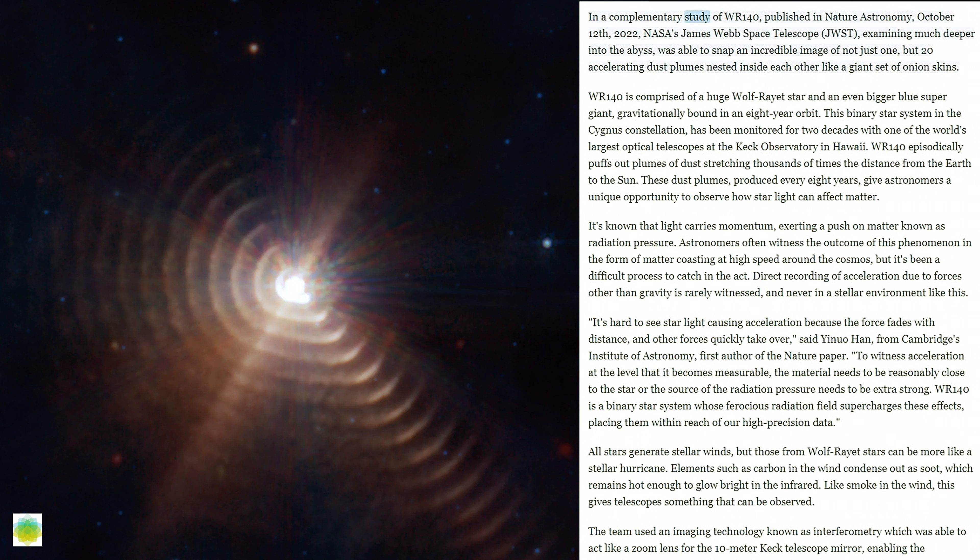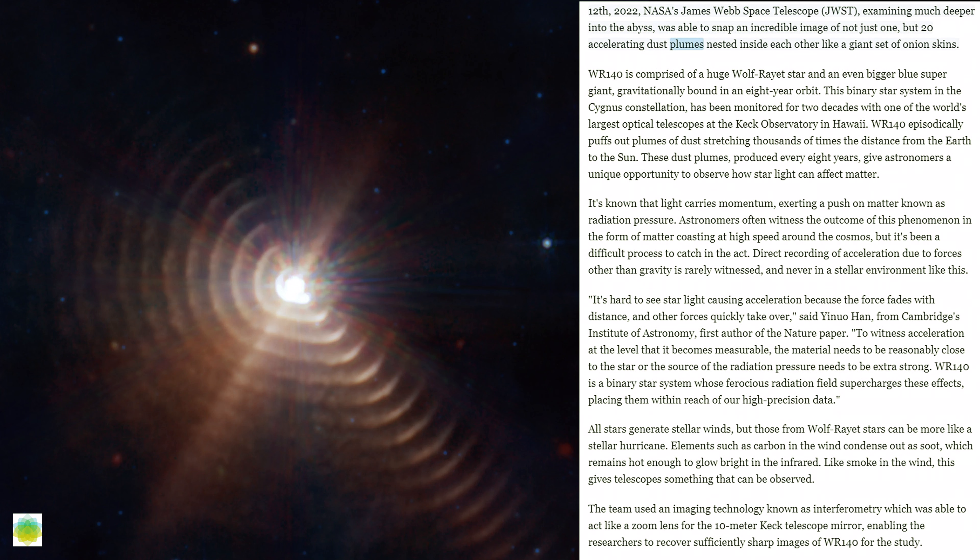In a complementary study of WR-140 published in Nature Astronomy, October 12, 2022, NASA's James Webb Space Telescope, JWST, examining much deeper into the abyss, was able to snap an incredible image of not just one, but 20 accelerating dust plumes nested inside each other like a giant set of onion skins.